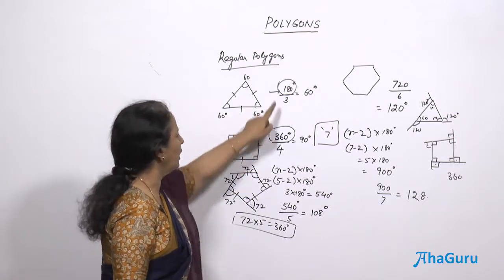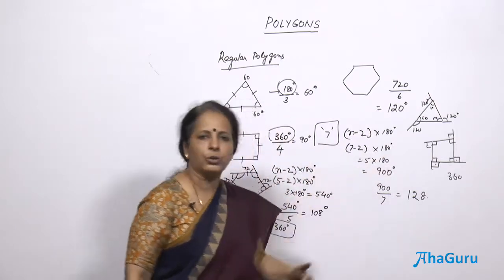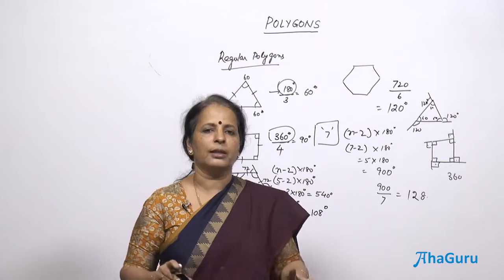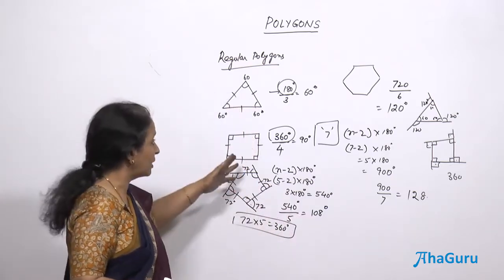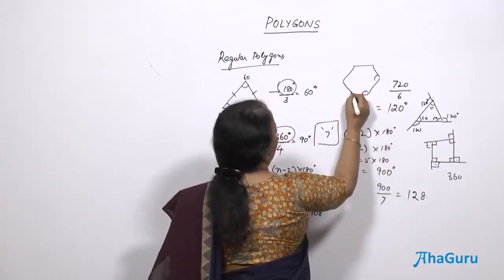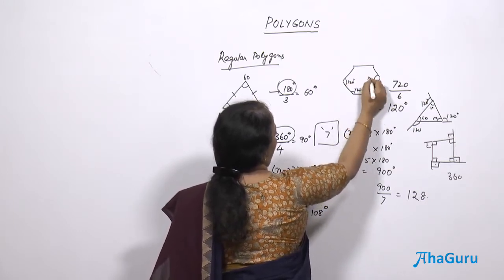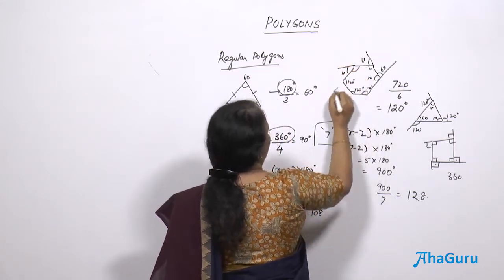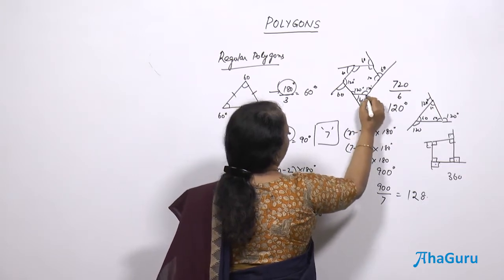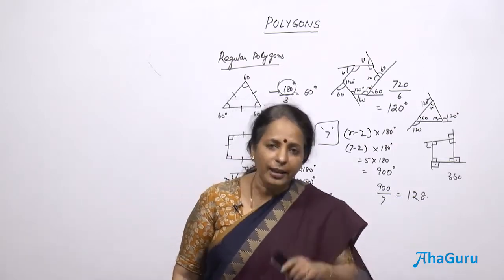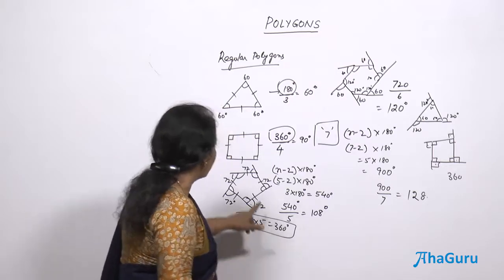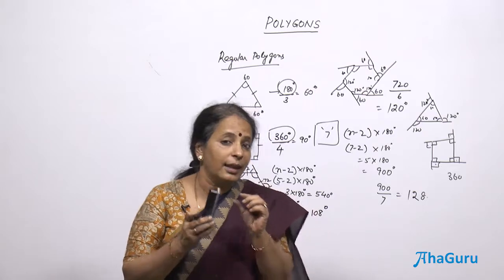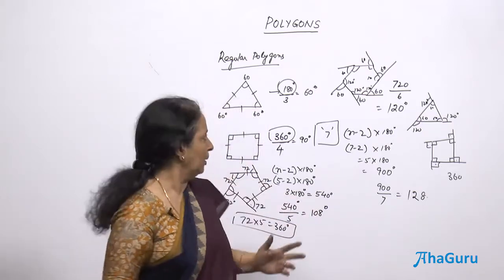Interior angle sum keeps on changing — from 180 it became 360, then 540, then 720, then 900 and so on. Individual interior angle size increases and the total increases. But the exterior angle size becomes smaller and smaller, yet the total still remains 360. For a regular hexagon with interior angles of 120 degrees, each exterior angle is 60 degrees, and 60 into 6 is 360.